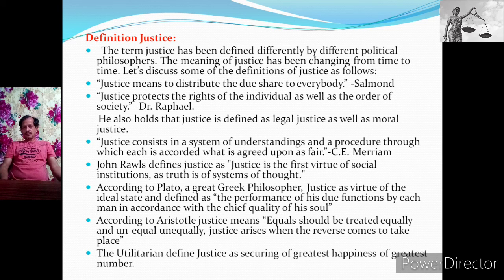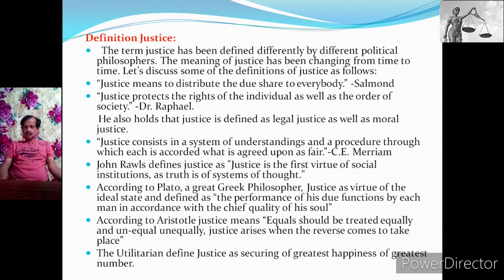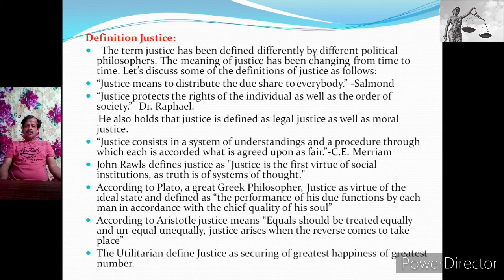According to John Rawls, a reputed theorist of justice, he defines justice as the first virtue of social institutions, as truth is of systems of thought. According to Plato, a great Greek political philosopher, justice is the first virtue of his ideal state, and he defines justice as the performance of due functions by each person in accordance with the achieved quality of his soul. In other words, according to him, justice means having and doing what is one's own.